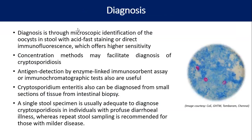Diagnosis depends on microscopic identification of oocysts in stool with acid-fast staining or direct immunofluorescence offering higher sensitivity. Concentration methods may facilitate diagnosis. Antigen detection by ELISA or immunochromatography tests are also useful. Cryptosporidium enteritis can also be diagnosed from intestinal biopsy. A single stool specimen is usually adequate for profuse diarrhea; a repeat sample is recommended for milder disease.